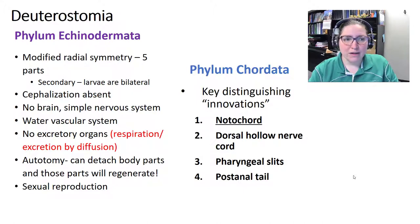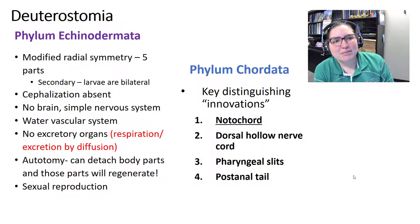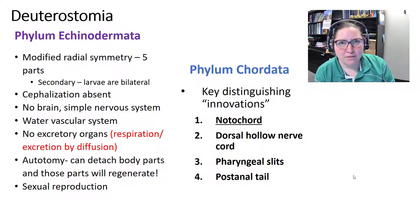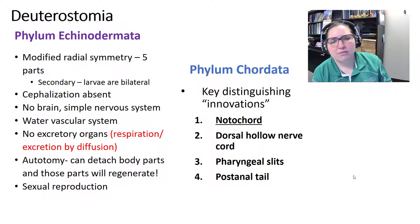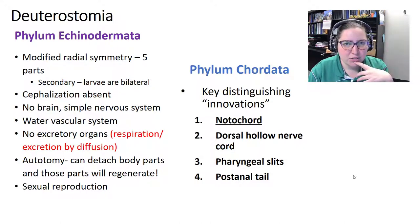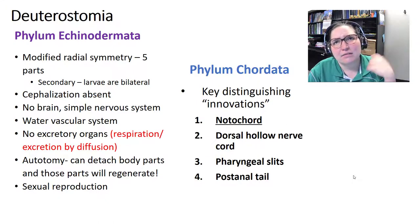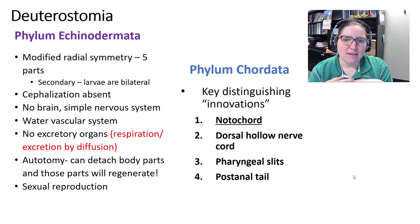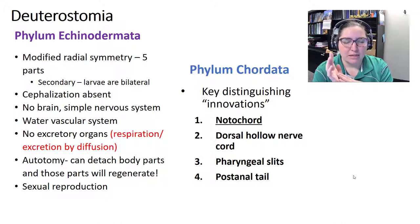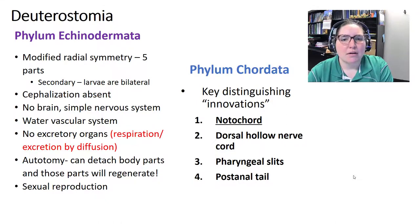Now to the deuterostomes — closer to what most people think of as animals. Echinodermata have a modified radial symmetry with bilateral larvae. They lack cephalization and have only a simple nervous system. They have a water vascular system, no excretory organ (using diffusion for respiration and excretion), can detach and regenerate body parts, and do sexual reproduction. The phylum Chordata — which includes us — has four key features: notochord, dorsal hollow nerve cord, pharyngeal slits, and a post-anal tail.